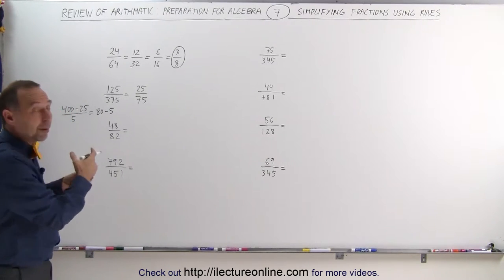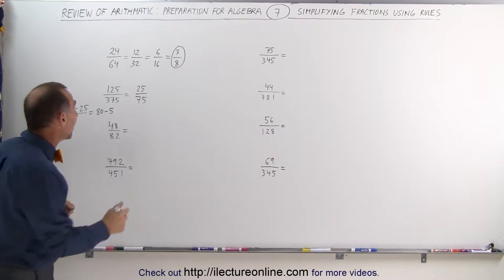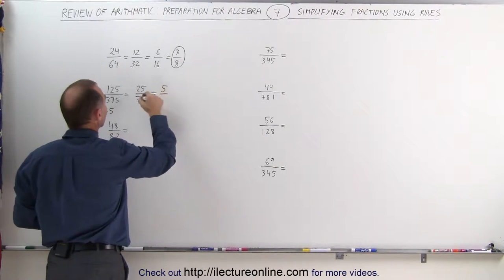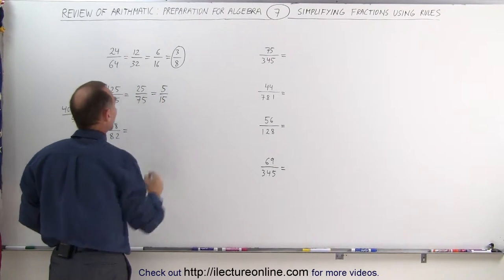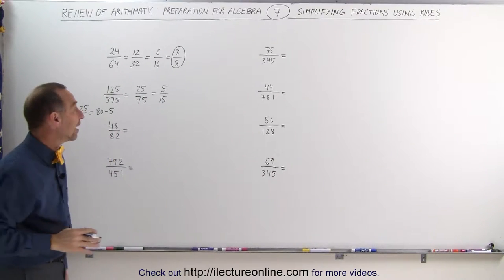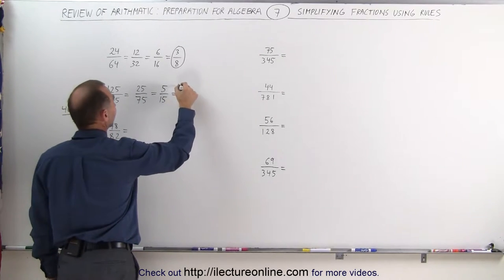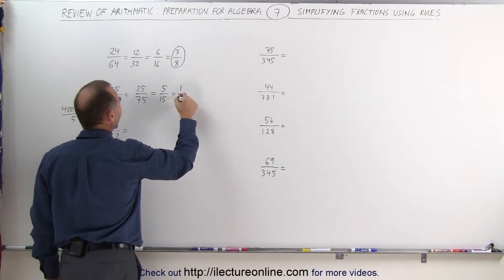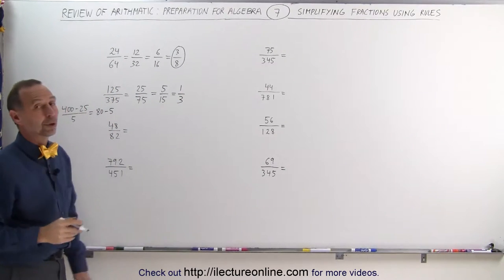But notice, they're still divisible by 5, because they both still end in 5. So 25 divided by 5 is 5, 75 divided by 5 is 15. They both still end up in 5, that means 5 divided by 5 is 1, 15 divided by 5 is equal to 3, so it ends up being 1 third.